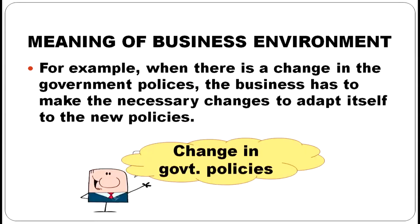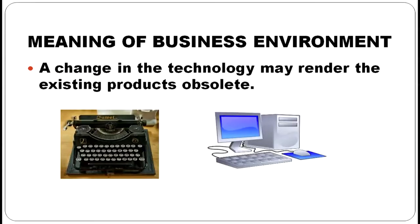For example, when there is a change in the government policies, the business has to make necessary changes to adapt itself to the new policies. The government has formulated a policy of computer involvement in every activity, so business adopted the strategy of using computers in every field, even in small retail outlets. A change in technology may render existing products obsolete.